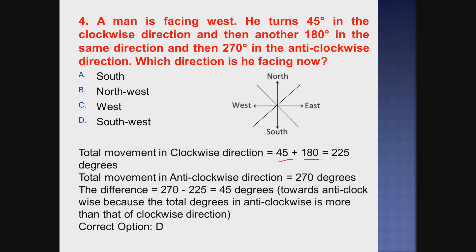Total movement in the clockwise direction: 45 plus 180 degrees = 225 degrees. Total movement in the anticlockwise direction is 270 degrees. Anticlockwise direction is opposite to the clockwise direction. Note: anticlockwise is otherwise known as counterclockwise - both mean the same thing, opposite to clockwise direction.